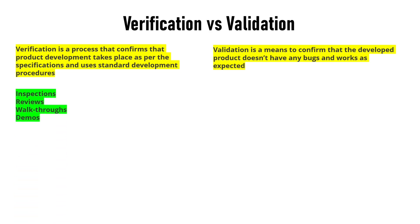So what does verification involve? Verification includes inspections, reviews, walkthroughs, and demos. You follow standard development procedures, create something, review it internally, and inspect it. In the development space you do all of these things by following the procedures.